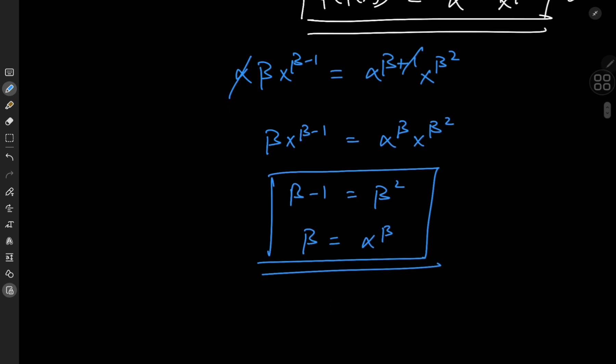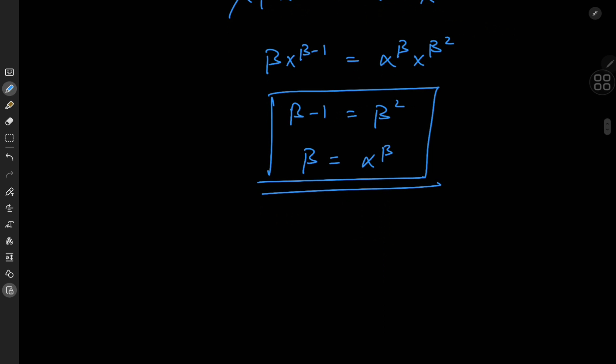From this system, once we find beta, alpha is automatically determined by the relation beta equals alpha to the beta. So let's solve for beta. We have beta squared minus beta plus one equals zero — the perfect chance for the quadratic formula to shine. Remember all those memes about never using the quadratic formula in real life? Well, we've proved all of them wrong. We have this functional differential equation we've never seen before, and to solve it we need the quadratic formula — if that's not a real-life application, I don't know what is.